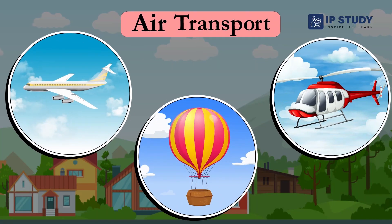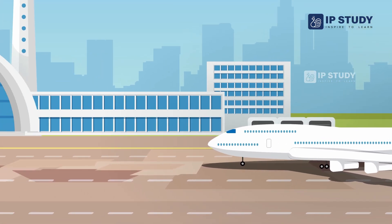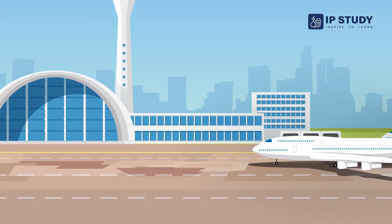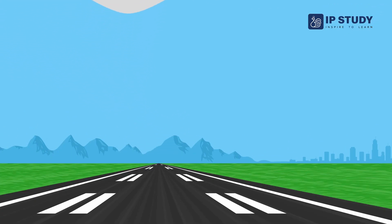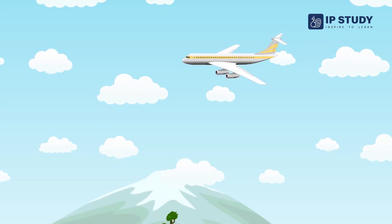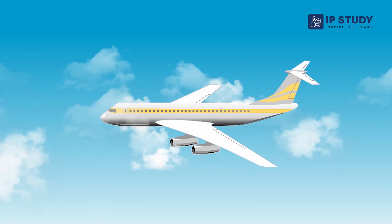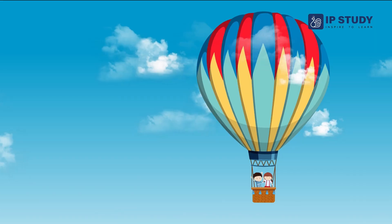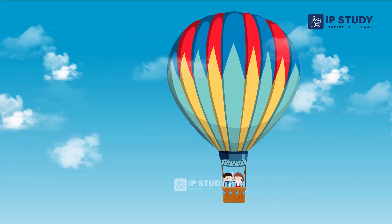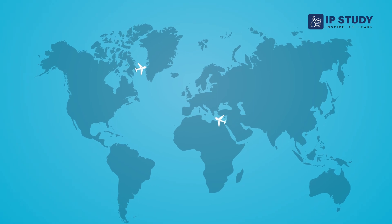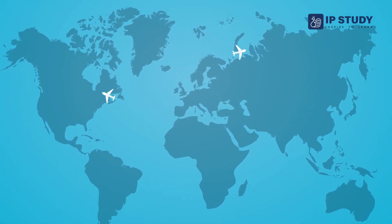Air transport. Air transport is the fastest means of transport. It has made travel so much faster. Different types of air transport in India are aeroplane, helicopter, hot air balloon, etc. Air transportation can be used to fly within the country or outside the country.